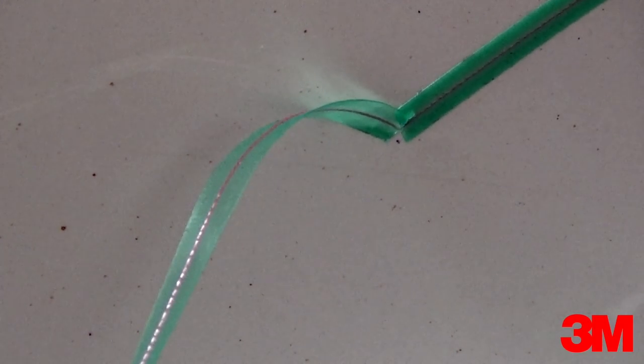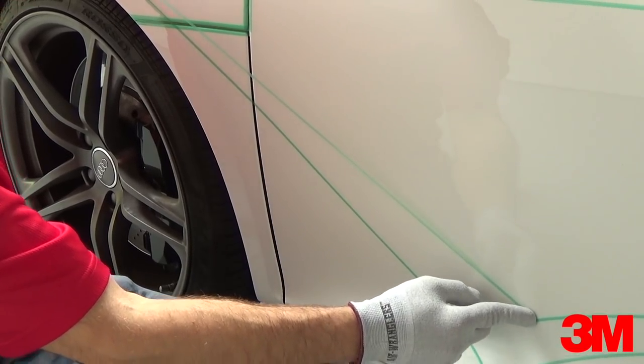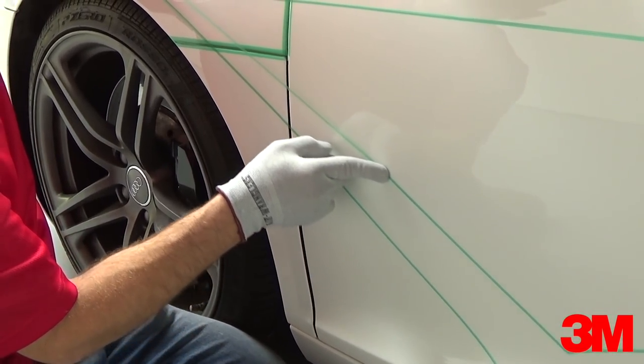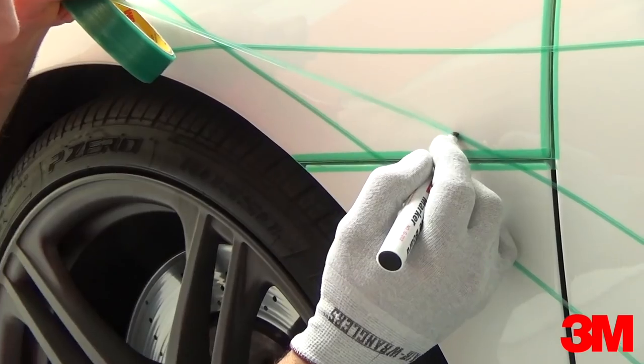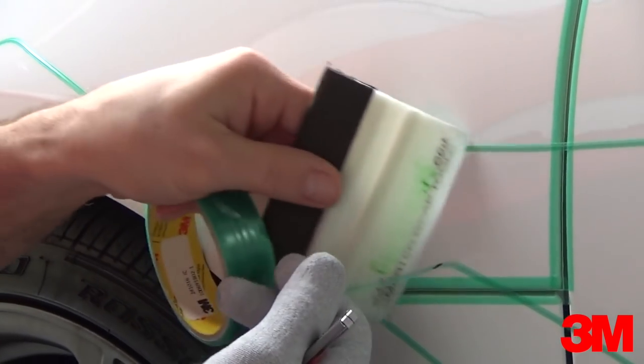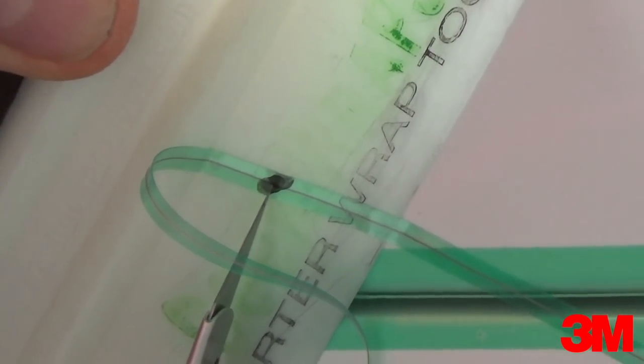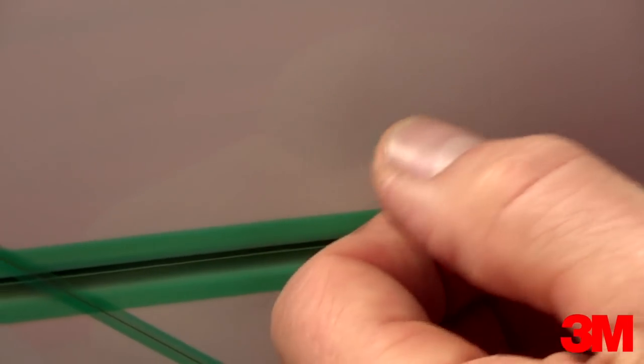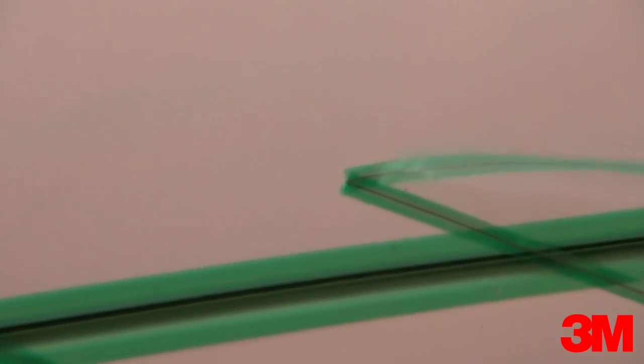From here simply work to the next point which in this case is another inside point. Simply repeat the exact same steps: mark the spot, pull the design line back, place the squeegee under the mark, make relief cuts top and bottom, pivot the design line, then move on to the next point.